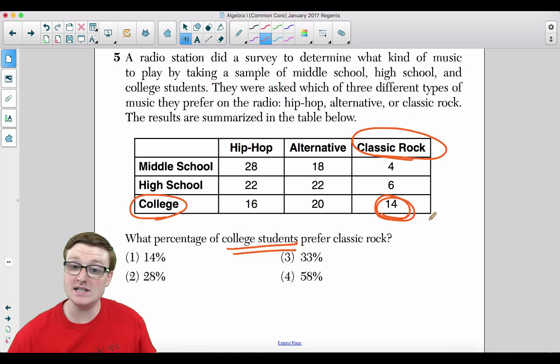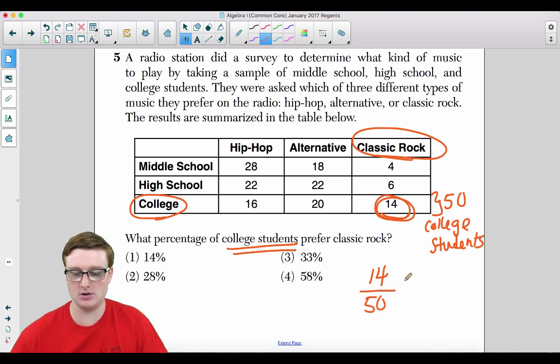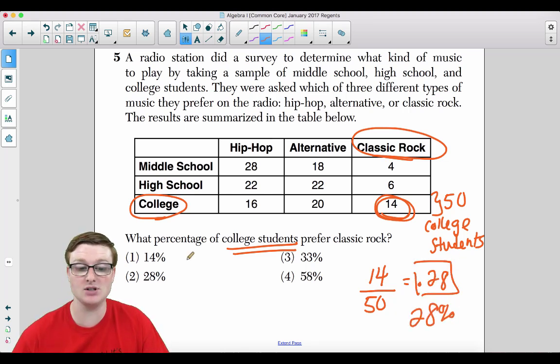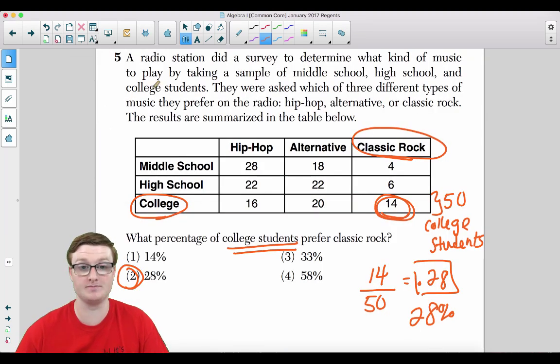We're looking at classic rock. We're looking at 14, the number 14, because that's how many college students like classic rock. There's 14 people that like classic rock in college. How many college students were surveyed? There were a total of 50 college students that were surveyed. So all you need to do is take 14 and divide that by the number 50. We're going to get 0.28. So that means 0.28, or that's the same thing as saying 28% of the people in college like classic rock. So the answer for number 5 is going to be choice 2.